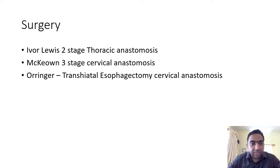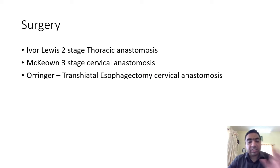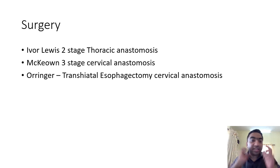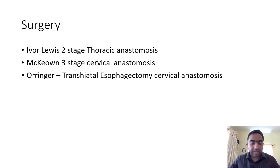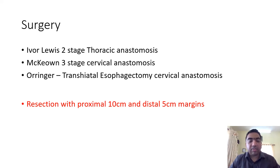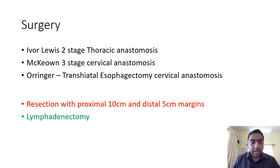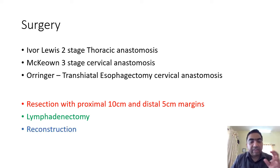Coming to surgical options, the Ivor Lewis operation has an intrathoracic anastomosis. Whatever surgery is chosen, the principles are: resection of the esophagus with a proximal 10 cm margin and distal 5 cm margin, lymphadenectomy of surrounding lymph nodes, and reconstruction with a conduit — which can be stomach, colon, or jejunum.